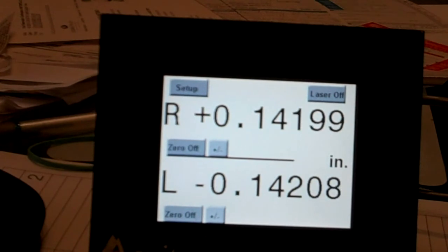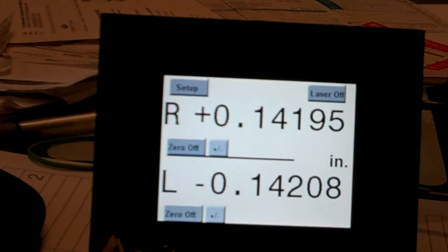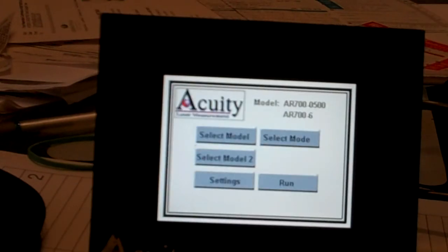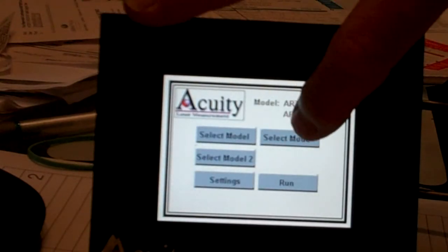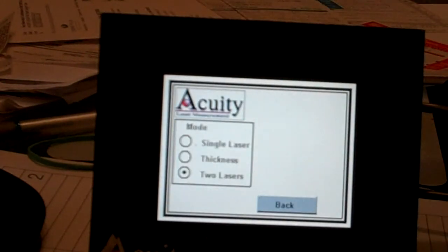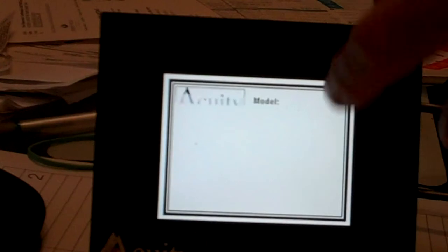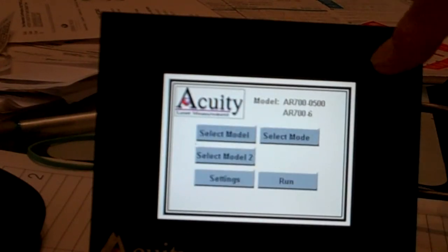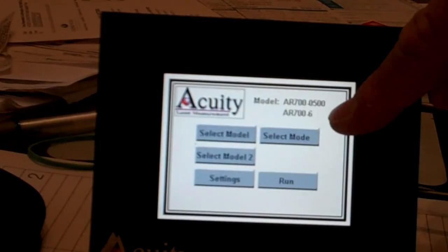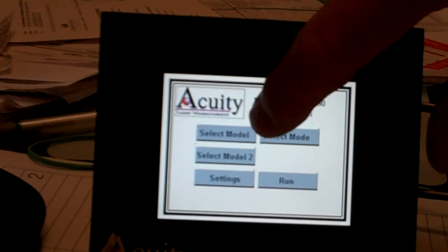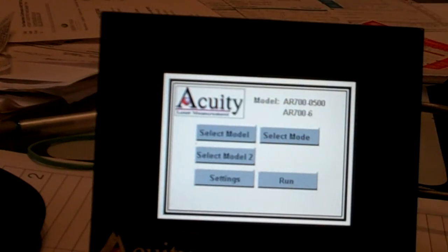Here you can see I've got the display reading two different lasers and if we go back into setup you would typically go into select mode and I would recommend that you start with the two lasers. And here you can see I've got the AR700-0500 and AR700-6. I did that with select model 1 and select model 2.